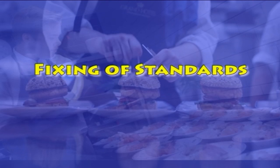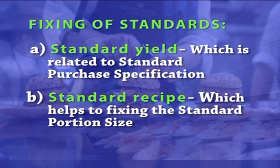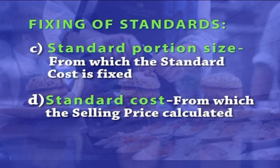We shall now move on to the next aspect: fixing of standards. The four stages in reducing loss from inefficient purchasing and processing, overproduction and excessive portion sizes are: fixing of standards, standard yield which is related to standard purchase specification, standard recipe which helps to fix the standard portion size, standard portion size from which the standard cost is fixed, and standard cost from which the selling price is calculated.